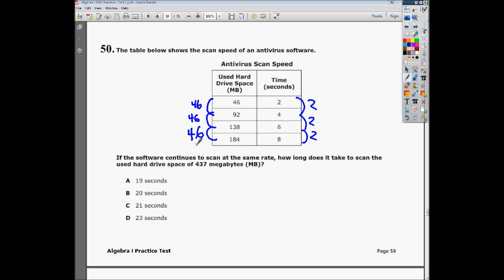So what you could do, in theory, is just keep adding 46 every time. So I did 184 plus 46, and I get 230, and that would be at 10 seconds. Then I add 46 more, and I get 276.